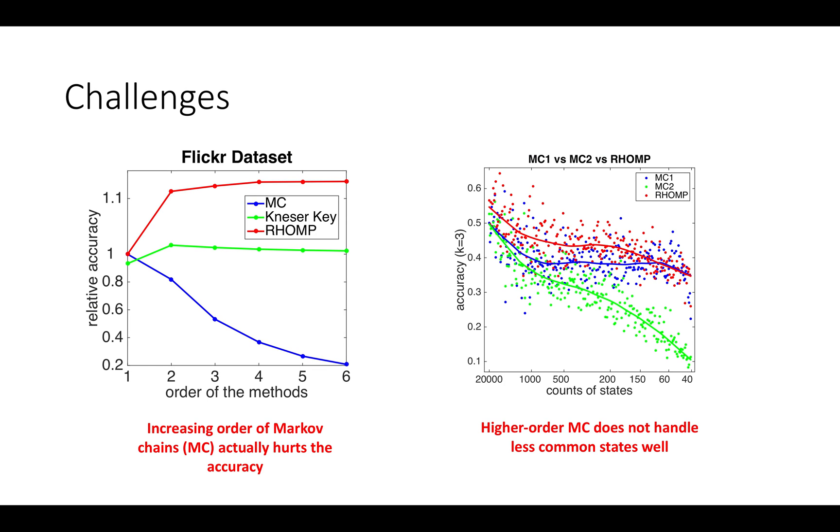The figure on the left shows that as the order increases, the Markov model can actually perform worse in terms of prediction accuracy. The figure on the right is the accuracy result when we sort the states based on their total counts. We notice that higher-order Markov chains do not handle the less common states very well.